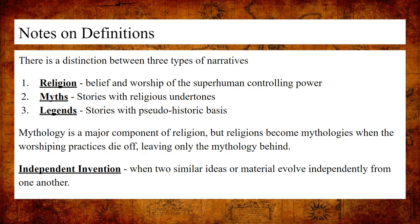The first important note is definitions, in order to lay the groundwork for what we'll be analyzing today. I've laid out the definition of independent invention at the very bottom, where it is written: when two similar ideas or materials evolve independently from one another. I've also made distinctions of the types of categories we'll be looking at.